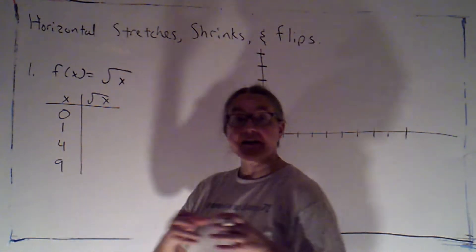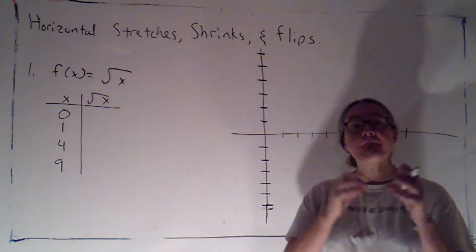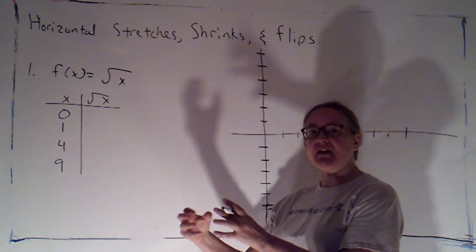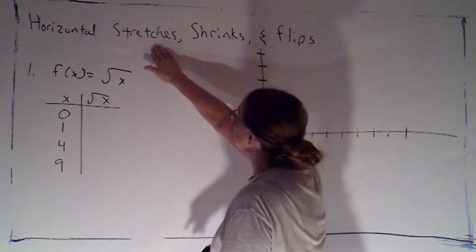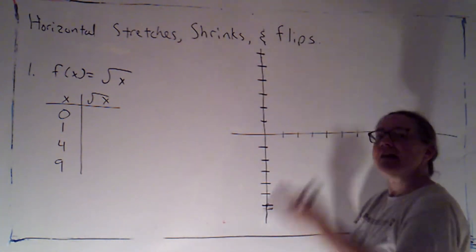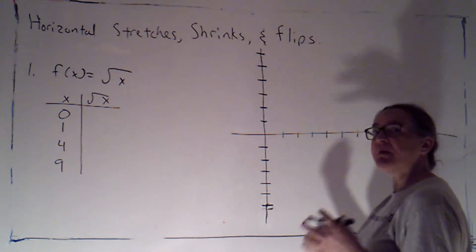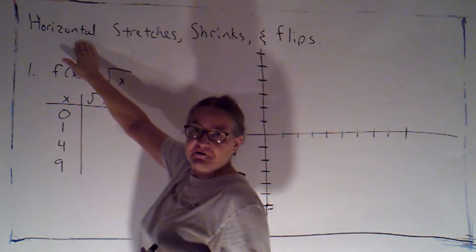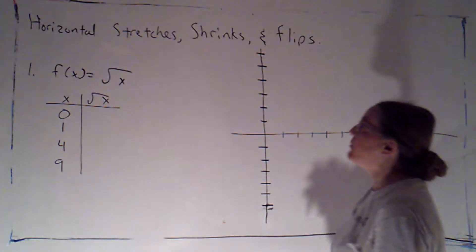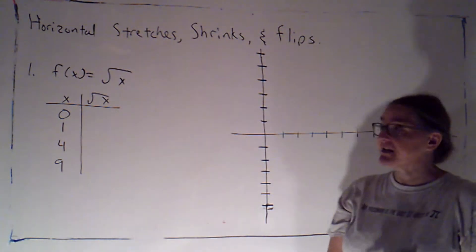In this video, we're going to take a look at what happens when we multiply our input x by a number first and then plug into a parent function. Multiplication accomplishes stretches, shrinks, and flips. If I modify the x value before I plug into the parent function, that's going to give me a horizontal change. So this is going to accomplish some horizontal stretches, shrinks, and flips.